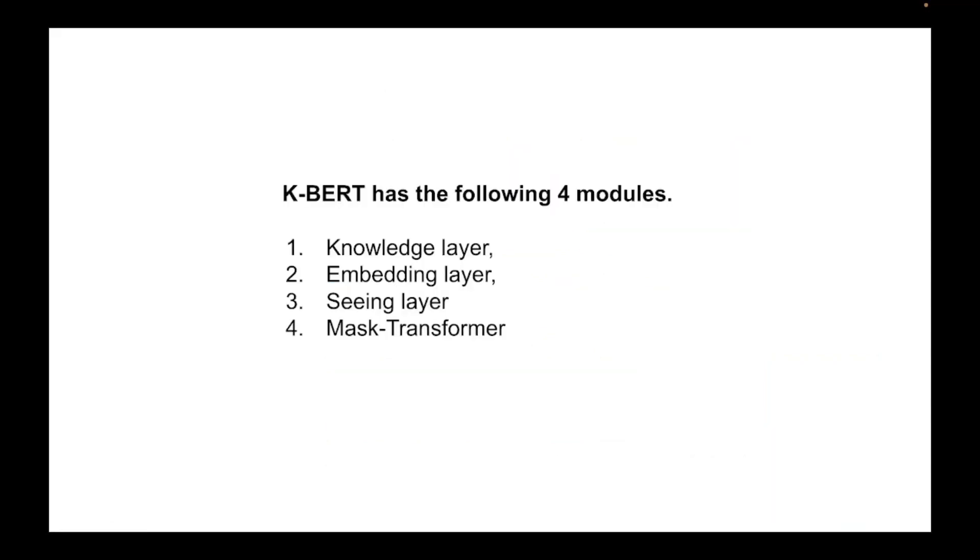Now let's come to K-BERT. So K-BERT has these four modules: it's called the knowledge layer, embedding layer, seeing layer, and mask transformer. So let's understand each of these one by one.